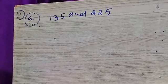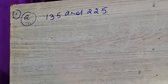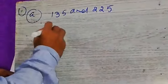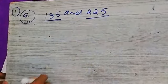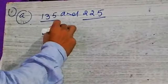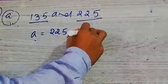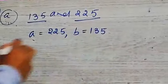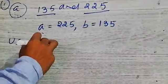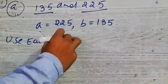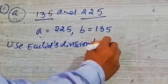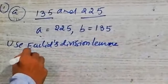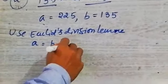Use Euclid Division Algorithm to find the HCF of 135 and 225. 225 is greater. Suppose A is equal to 225 and B is equal to 135.